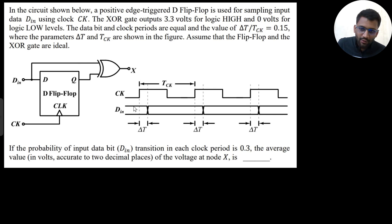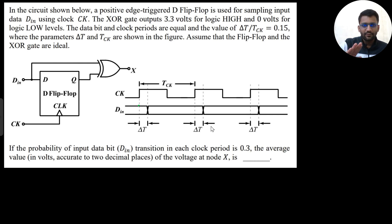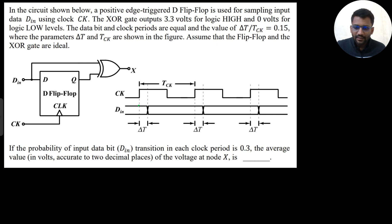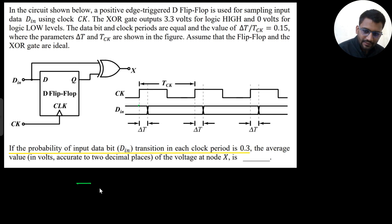Let's understand the question first. Let's understand what this kind of data representation means — why do we show the waveform like this, sometimes going from one to zero and zero to one? What is the real meaning of this? There is a D flip-flop given with a positive clock edge, and a data input going into an XOR gate. We have the clock waveform and the data waveform.